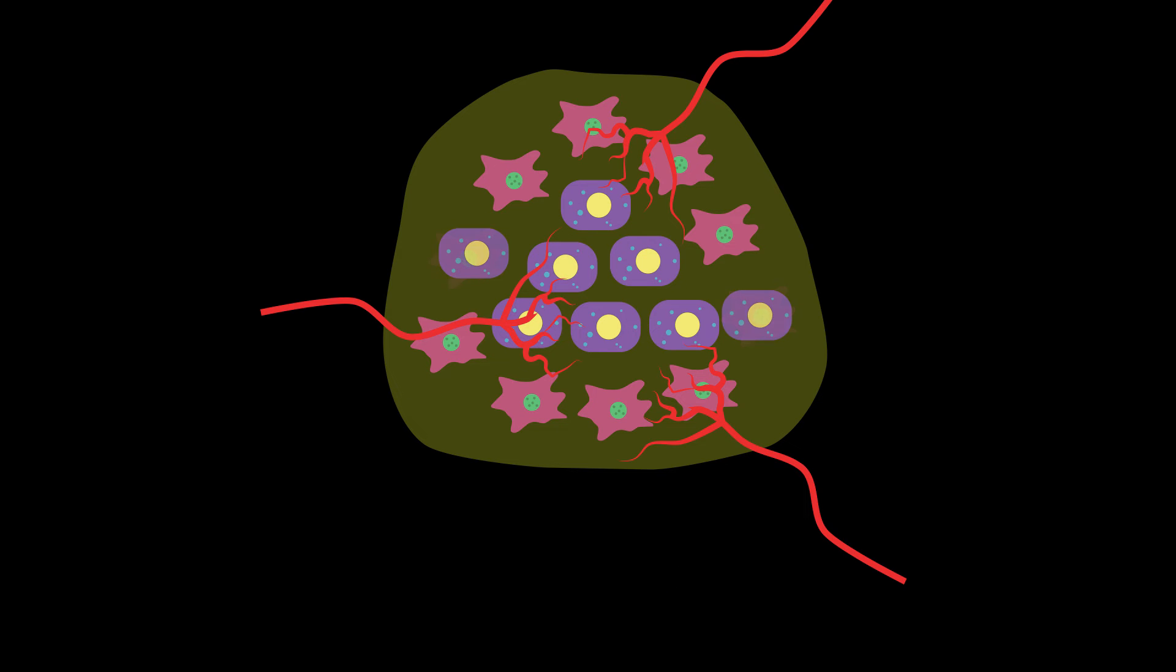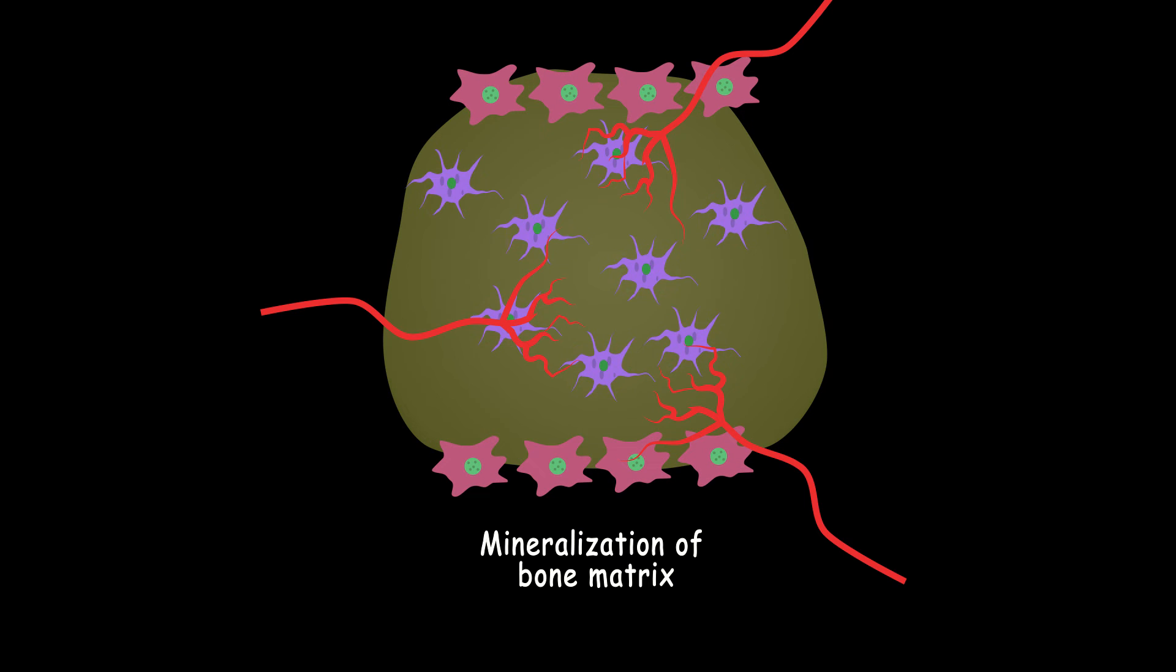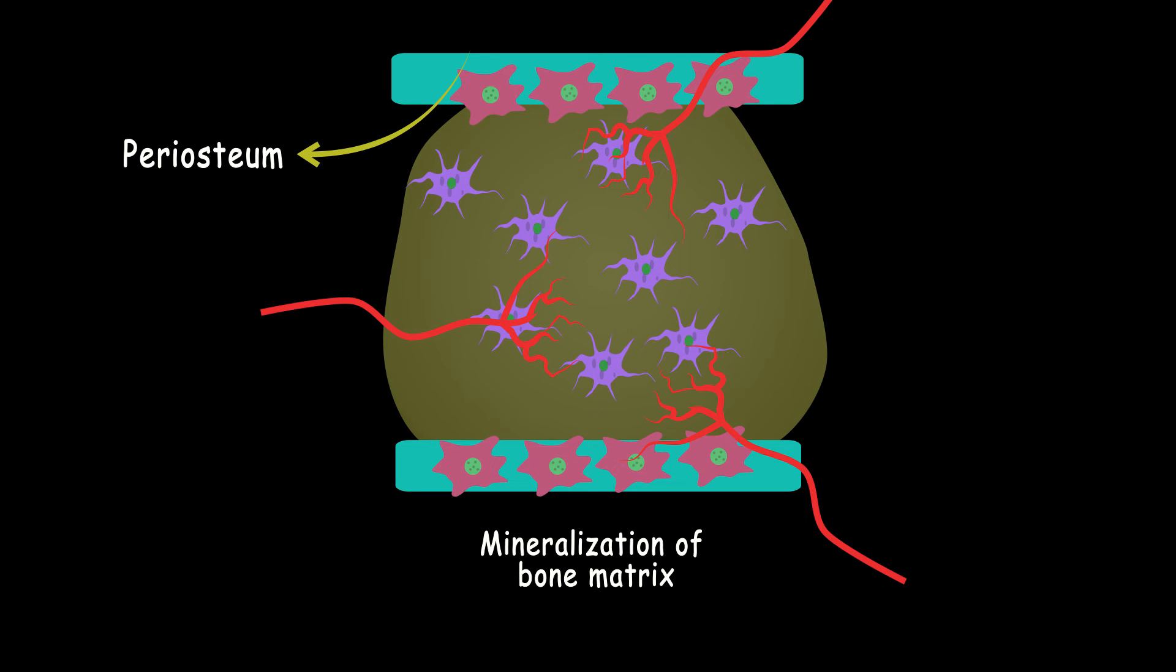Osteoblasts continue producing bone matrix until they trap inside the matrix and differentiate into osteocytes. Finally, the mesenchymal cells around the mineralized matrix condense and make periosteum.